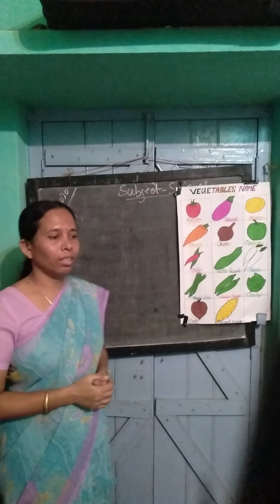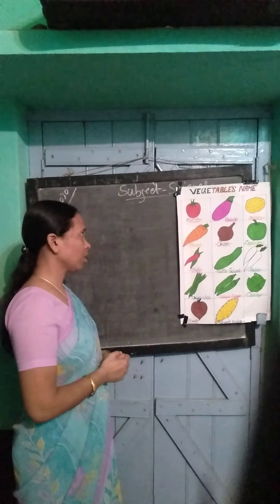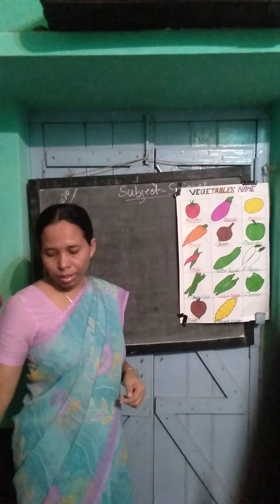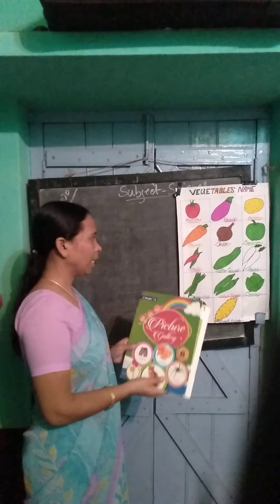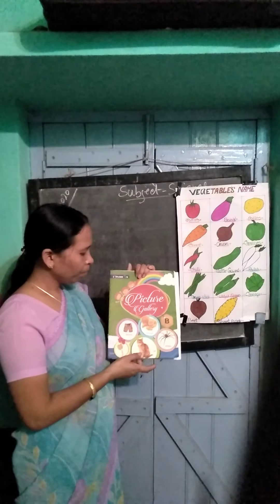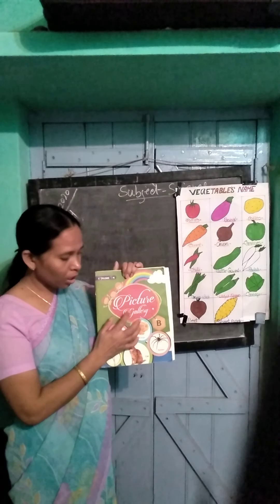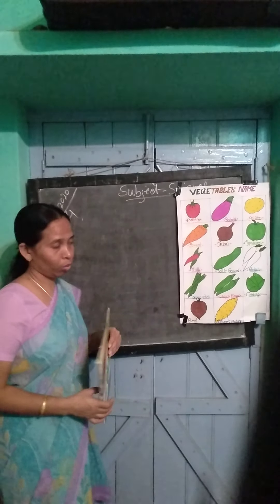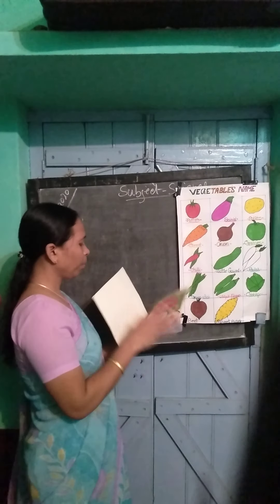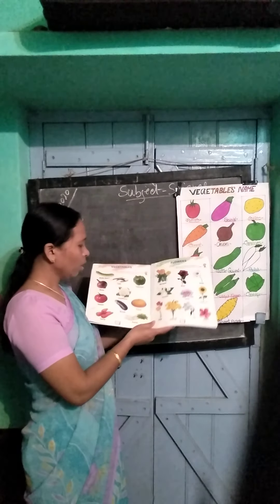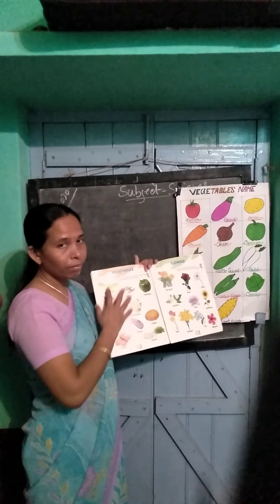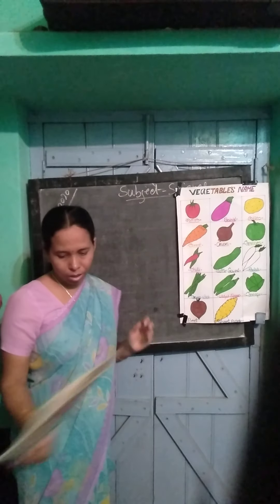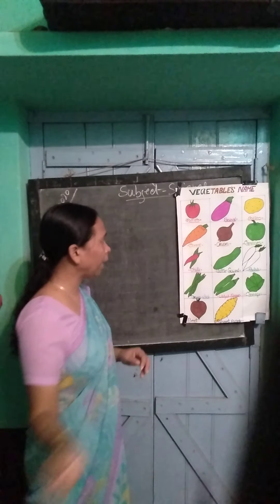Good morning children. This is our science class. Today we are going to learn vegetables names. Picture gallery — the book is Picture Gallery, page number 4. You will see page number 4. There are some vegetables, and you will learn their names now.